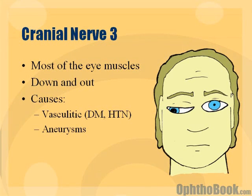Cranial nerve 3, the oculomotor nerve, is the most important nerve as far as eye movement. If you knock that out, you knock out most of the eye muscles. You don't need to remember what muscles cranial nerve 3 innervates — just remember what it doesn't innervate: it doesn't innervate the lateral rectus, because that's the abducens nerve (number 6), and it doesn't innervate the superior oblique muscle with its pulley. So everything else it innervates.